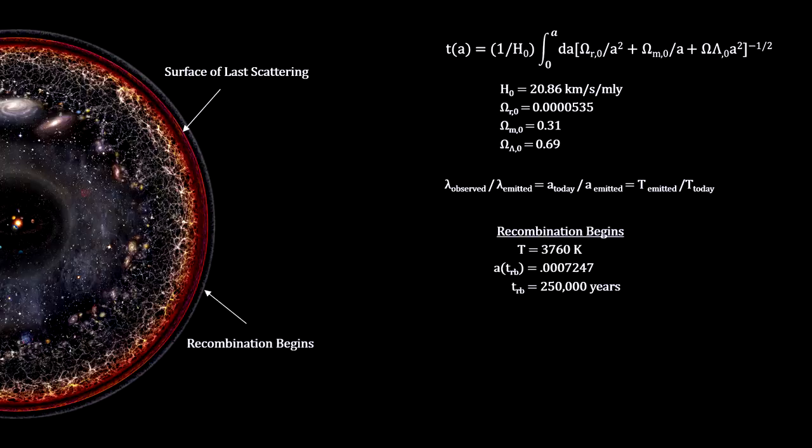So we can say, with a fair degree of accuracy, that decoupling started around 250,000 years into the expansion, and the surface of last scattering occurred around 370,000 years into the expansion.